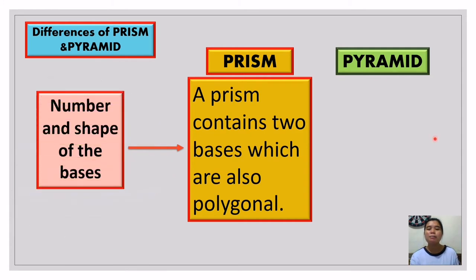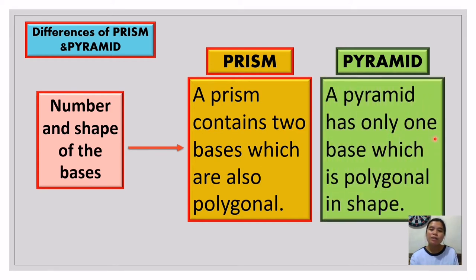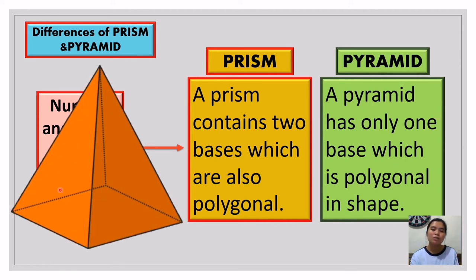How about the pyramid? How many bases does a pyramid have? A pyramid has only one base, which is polygonal in shape. So if a prism has two bases, a pyramid has only one. For example, this is called a square pyramid. Its base at the bottom is square — considered a square. It has only one base. The name of a pyramid depends on its base. Since the base is square, it is called a square pyramid. The number of bases: prism has two, pyramid has one.